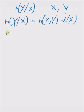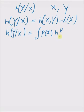Starting with the definition of h of Y given X, we have integral p of small x multiplied by h of capital Y at x equal to small x, that is realization of x, dx.